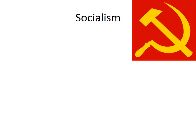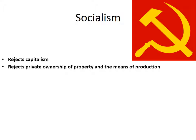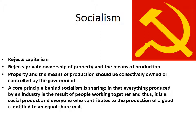Socialism. Since socialism is a less extreme version of communism and Marxism, we'll start with that. Socialism rejects capitalism and, in general, rejects private ownership of property and private ownership of the means of production. Instead you would have collective ownership of property and the means of production. Its core principle is sharing — everything produced by an industry is because people work together, everyone puts in, and therefore everyone gets out and is deserving of an equal share.